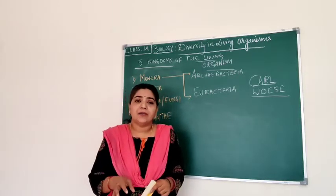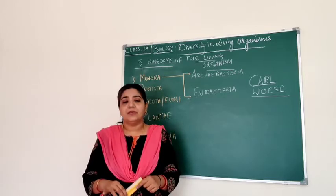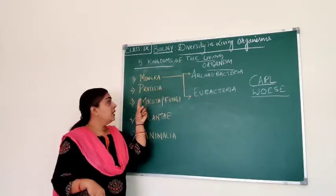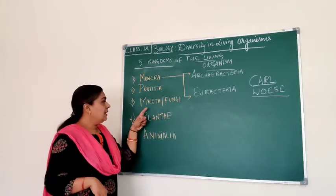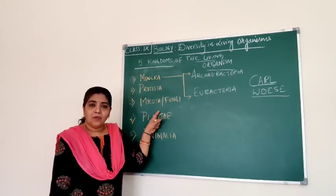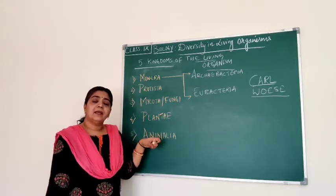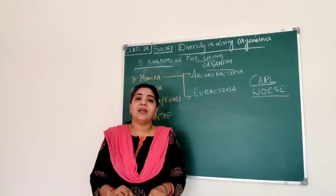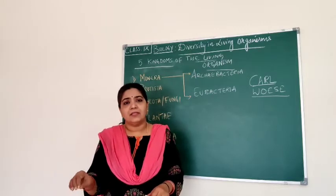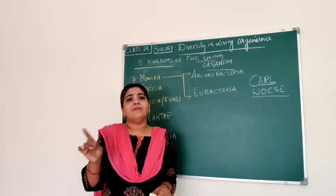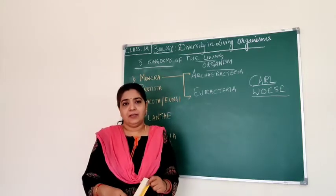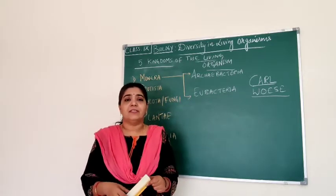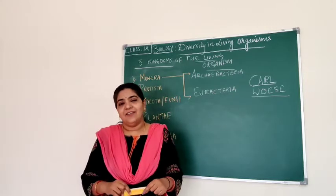The five kingdoms of the living world are: kingdom Monera, kingdom Protista, kingdom Mycota or Fungi, kingdom Plantae, and kingdom Animalia. We take any organism and they occupy one of these five kingdoms. If it is not found in any of these kingdoms, then it is not a living form.